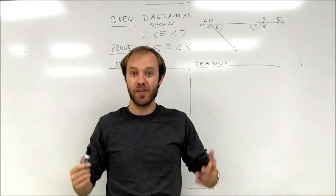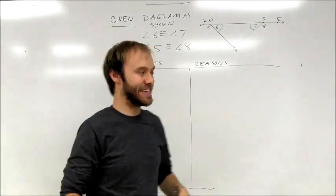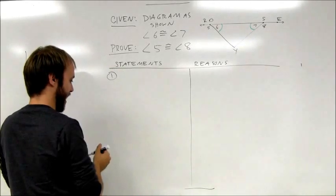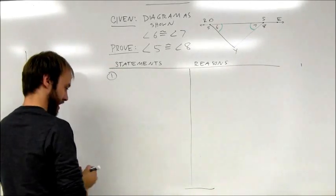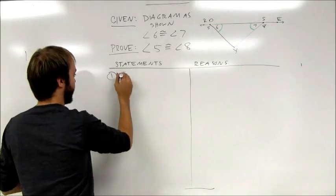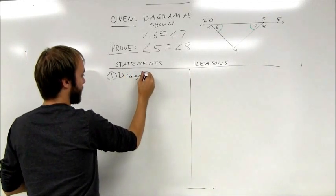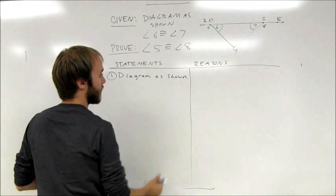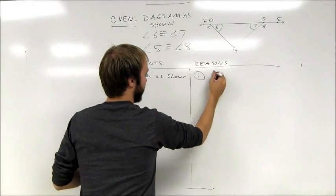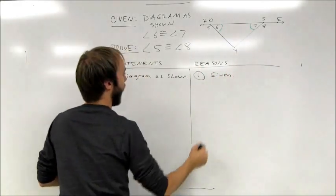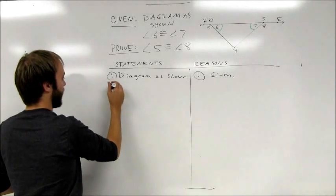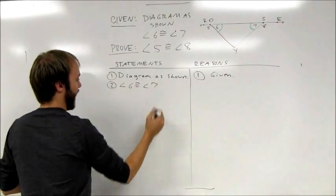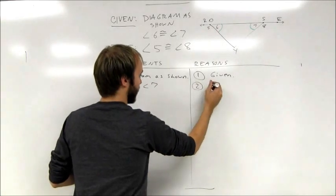It doesn't guarantee that it's going to work, but it's a good strategy to consider. All proofs start out the same way — you have your diagram as shown statement and any givens. So that first reason is given. I'm also told that angle 6 is congruent to angle 7, and that was also given.